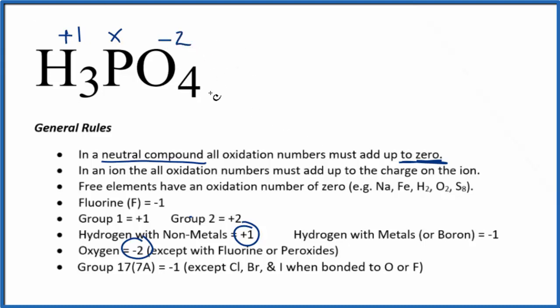And we said all of this adds up to zero. So let's make an equation. We have three times plus one, that's three, plus X for the phosphorus, and then we have four times minus two, that's minus eight. That's all going to equal zero.